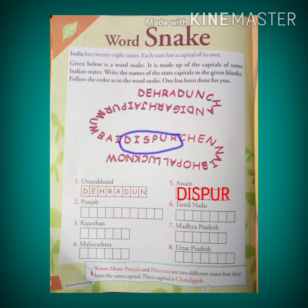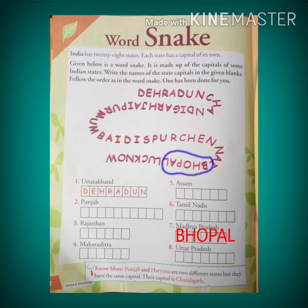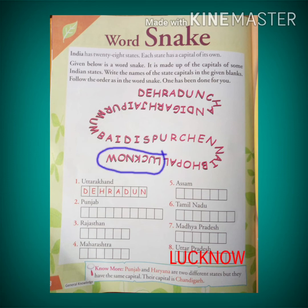Sixth number is Tamil Nadu — the capital of Tamil Nadu is Chennai. Seven is Madhya Pradesh — the capital of Madhya Pradesh is Bhopal. And last one is Uttar Pradesh — the capital of Uttar Pradesh, as given in the word snake, is Lucknow.